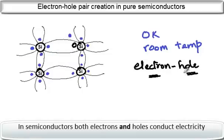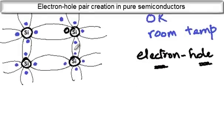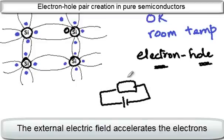Electrons as well as holes are the charge carriers. It's easy to understand that these free electrons are available for charge conduction and they will move when an external field is applied. If you have a semiconductor material connected to an external source, we have an electric field which will act on the material and these free electrons will move as a result.